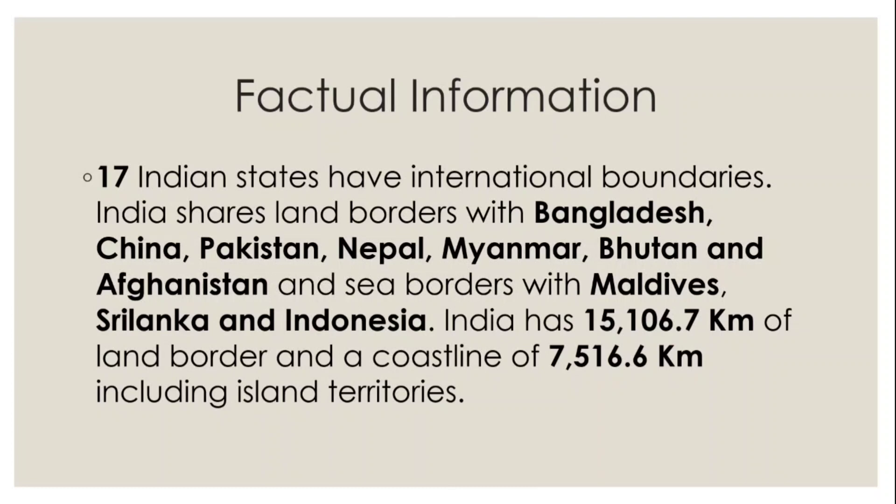Ab dekhte hain kitni area share hoti hai. Land borders jo hain — 15,106 km, aur coastline 7,516 km. So land border is 15,106 km and sea border is 7,516 km, including island territories. This is all for today — kuch facts cover ki humne. Milte hain next class mein, till then thank you so much and bye bye.